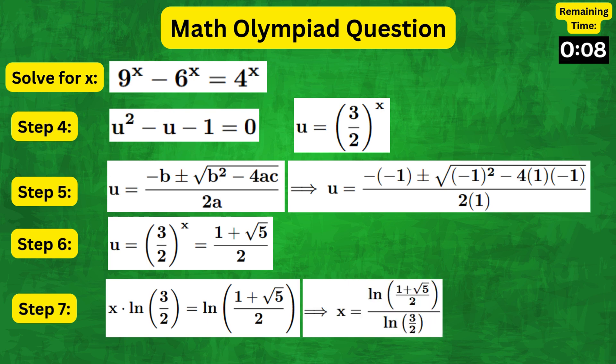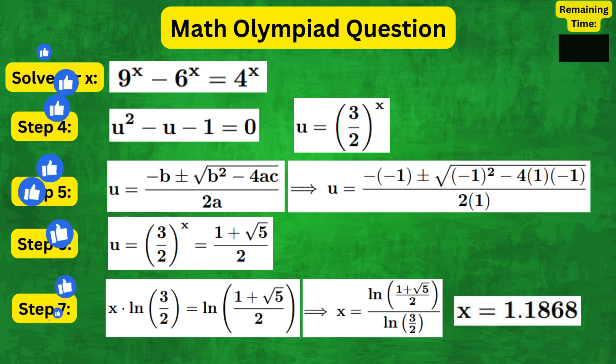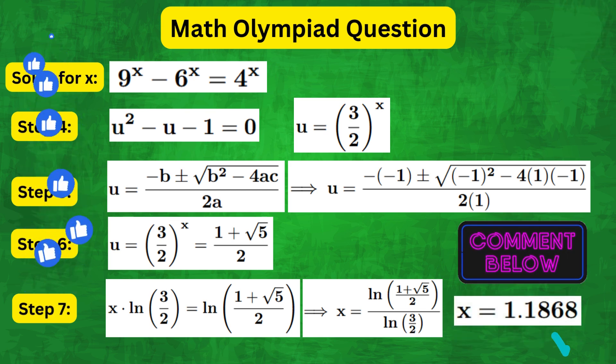Now rearranging for x, we get x equals natural log of 1 plus root 5 over 2 divided by natural log of 3 over 2, which using the calculator comes out as 1.1868, which is your answer.